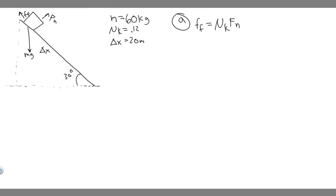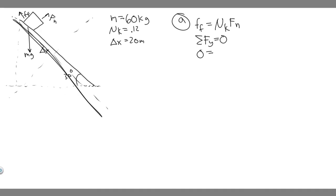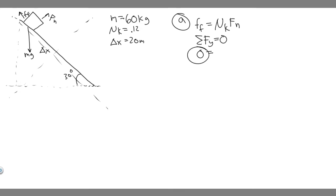We want to find the force of friction, and we're given μk = 0.12, but we need the normal force. To calculate the normal force, we take the sum of the forces in the y-direction, which equals zero because the student is not moving in that direction. So 0 = F_N minus the y-component of gravity. The x-axis is aligned along the incline, so the normal force is in the y-direction.